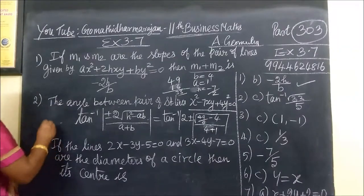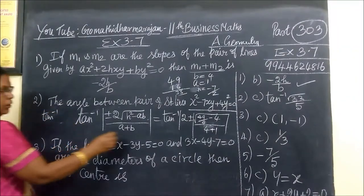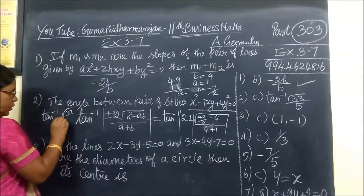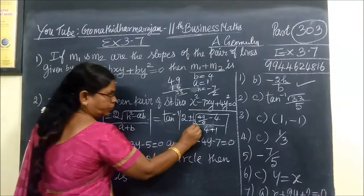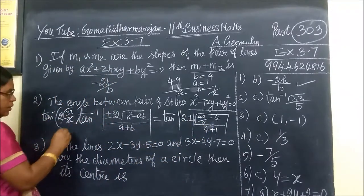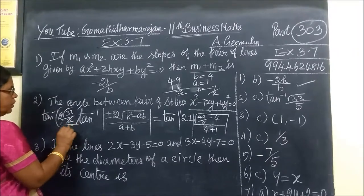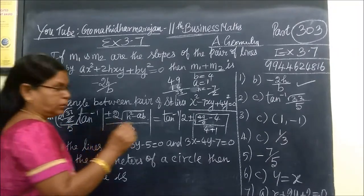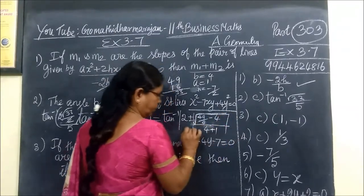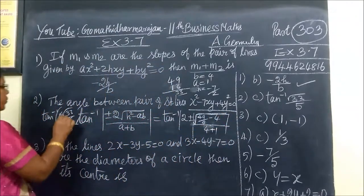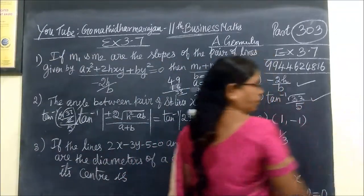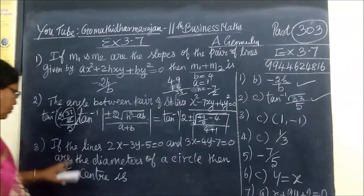So tan inverse root(33)/5. Simplifying, the answer is tan inverse root(33)/5. Coming to the next question.